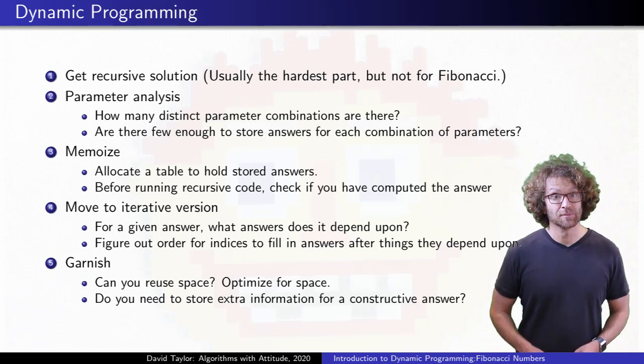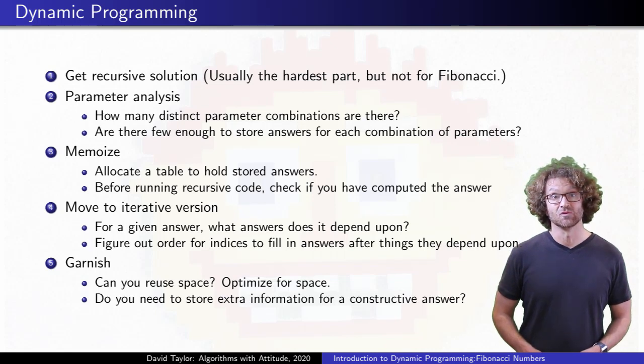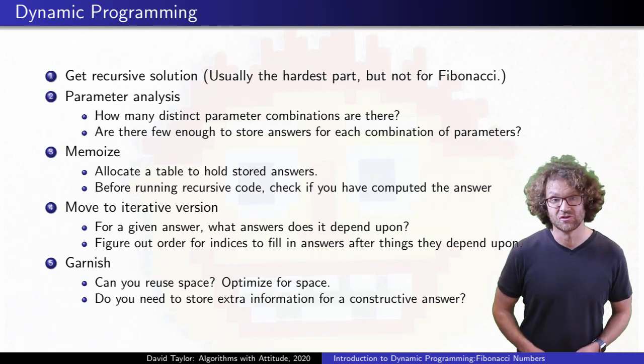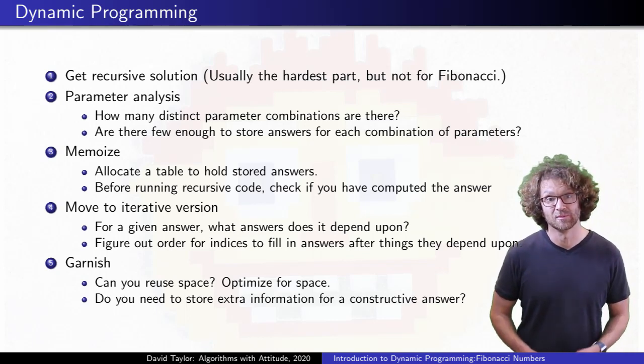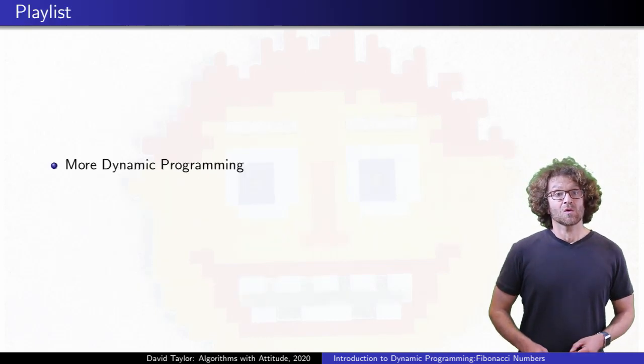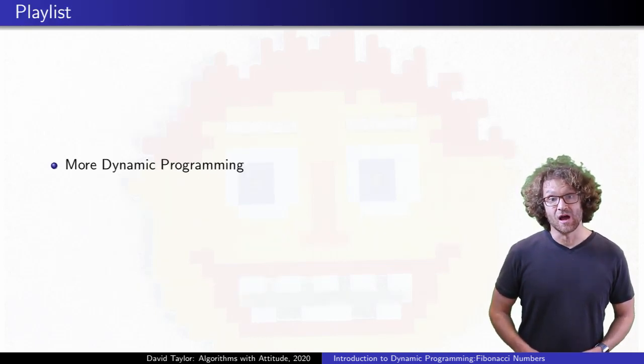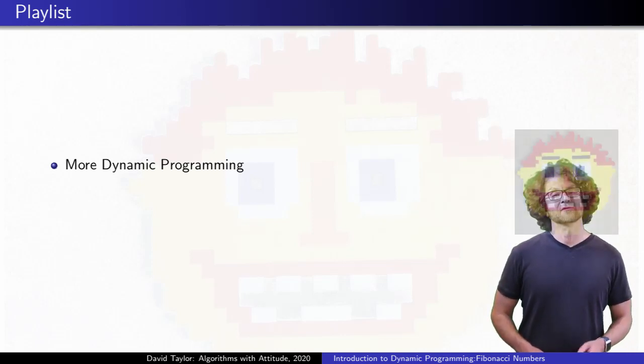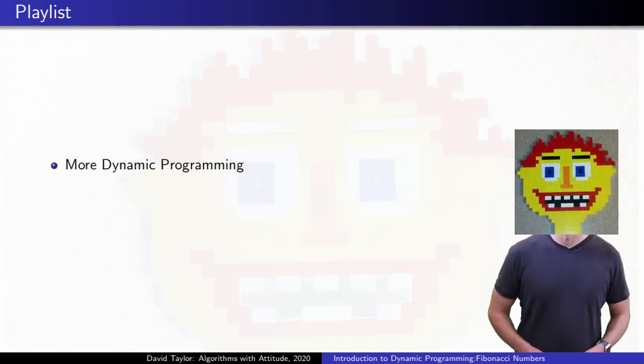I've ignored complicating issues about large Fibonacci numbers, like the fact that they grow exponentially, and this isn't the fastest way to compute them anyway. But it's a simple example to set up these steps for dynamic programming. Sometimes, there's an extra step at the end, especially for optimization problems. We didn't see that one here. We will see each step fleshed out more in the next upcoming videos, but for now, I've got to work on my ASMR video.